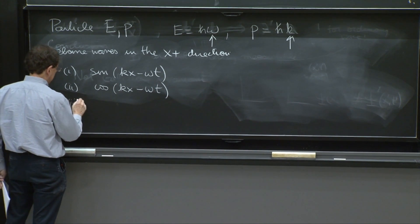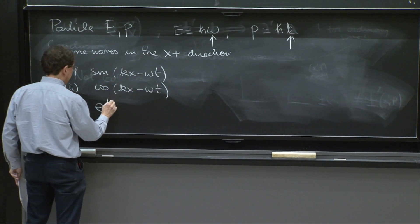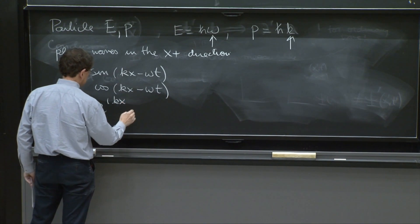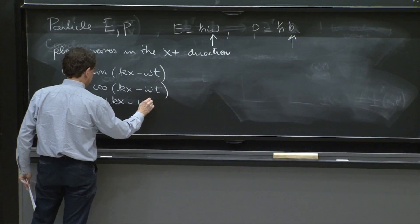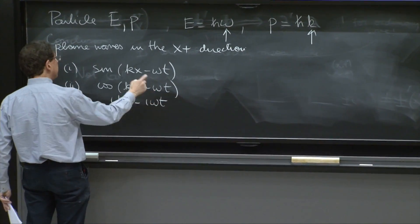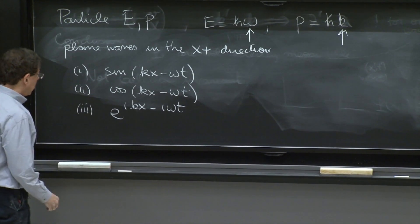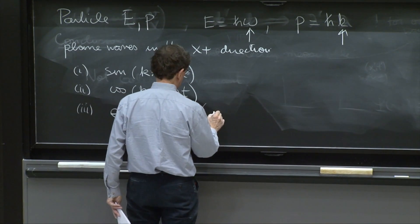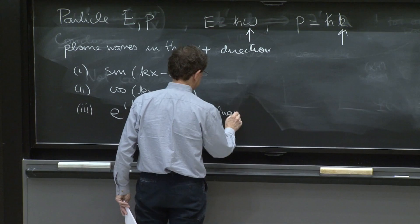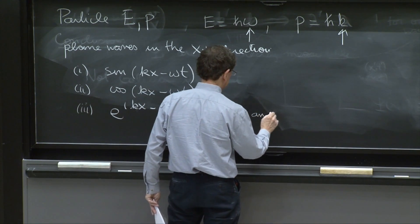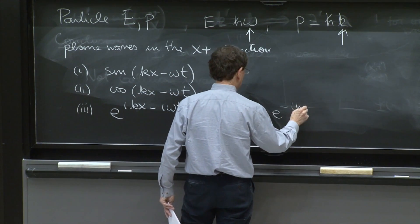Maybe it is e to the ikx minus i omega t. These things move to the right. That minus sign is there. So with an e to the minus i omega t.